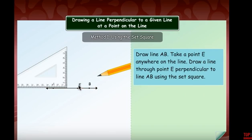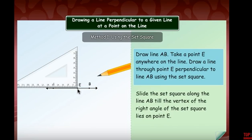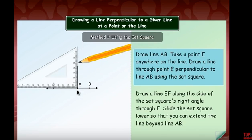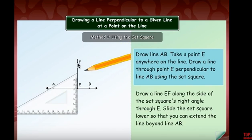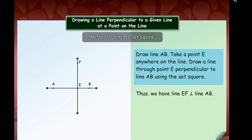Slide the set square to point E, making sure it sits on the line, and draw a straight line ensuring a 90-degree angle. Take a straight line and name it FE. So EF is perpendicular to AB.